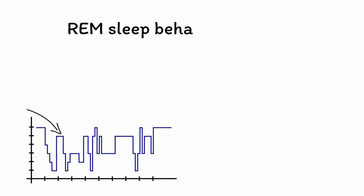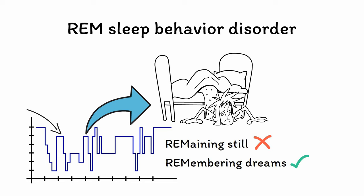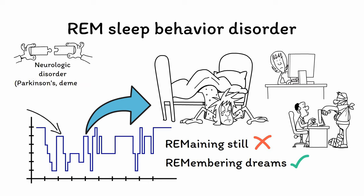The last two disorders also involve abnormalities of the REM sleep state. First, REM sleep behavior disorder is characterized by abnormal movements during REM sleep — the remaining still part of REM sleep has been lost while the remembering dreams part remains. This lack of muscle paralysis leads to the patient acting out their dreams, which can be very disruptive, and patients can sometimes even unintentionally injure themselves or their partners during a particularly violent dream. REM sleep behavior disorder rarely occurs on its own, with more than 90% of patients going on to have a neurologic disorder, with Parkinson's disease and dementia with Lewy bodies being common. Melatonin is a good first-line treatment option. Taking steps to make the sleep environment safer, such as putting another mattress on the ground in case the patient rolls off the bed, can also help prevent injuries.